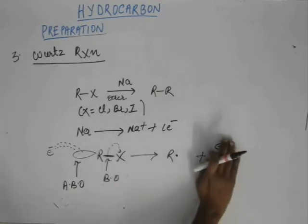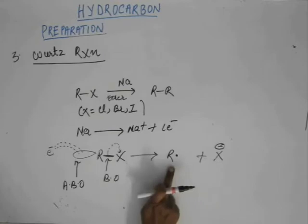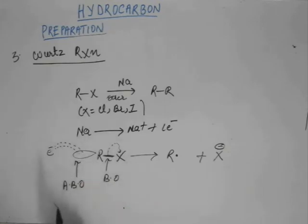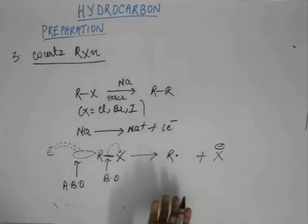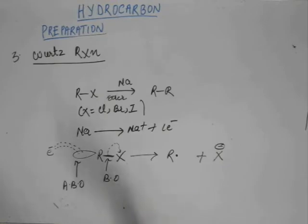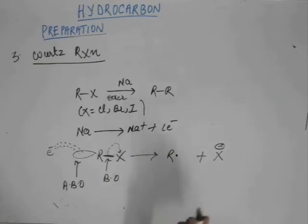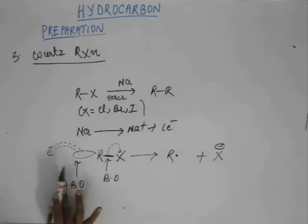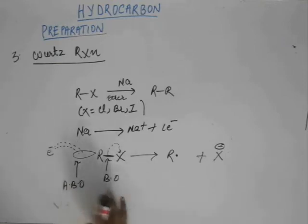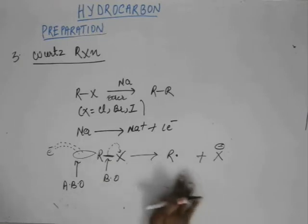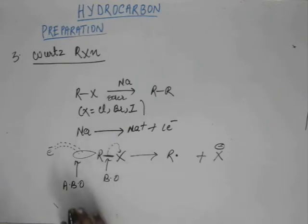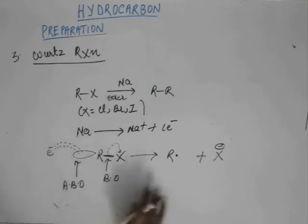Somewhere in the system it will settle down and watch what's happening. Now, this R dot could have been R minus as well. Suppose this anti-bonding orbital gains one more electron. Depending upon the density of the charge available outside, it will gain electrons. Suppose the density outside is very high — I have put a huge amount of sodium metal — then the electrons coming out will be very high, and instead of gaining one electron, it may gain two electrons. So if it gains two electrons, instead of R dot, we'll have R minus. But the more established, more authentic mechanism is that it accepts one electron at a time and forms R dot.